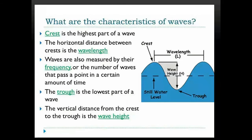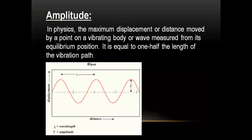The first characteristic of waves is wavelength. To understand wavelength, we must first understand crest and trough. The mean position is indicated by the dotted line. The area above the mean position is the crest, and the area below the mean position is the trough. The distance between a crest and a trough is considered the wavelength, and its unit is meter.